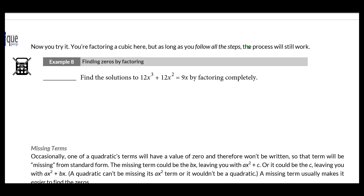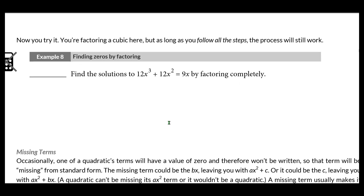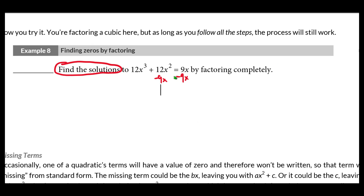In example 8, we have to find the solutions — the values of x that satisfy this equation. This is actually a cubic. From the previous page, we want to rearrange the equation so that everything is on one side and zero is on the other. I'm going to start by subtracting 9x from both sides, and I get 12x³ plus 12x² minus 9x equals zero.